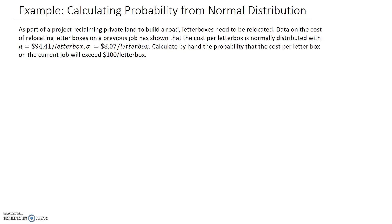As part of a project reclaiming private land to build a road, letterboxes need to be relocated. Data on the cost of relocating letterboxes on a previous job has shown that the cost per letterbox is normally distributed. We're given the mean μ = $94.41 and the standard deviation σ = $8.07 of that cost per letterbox.